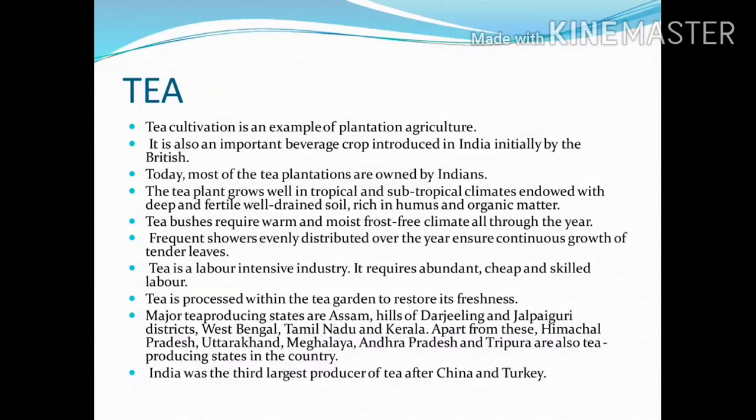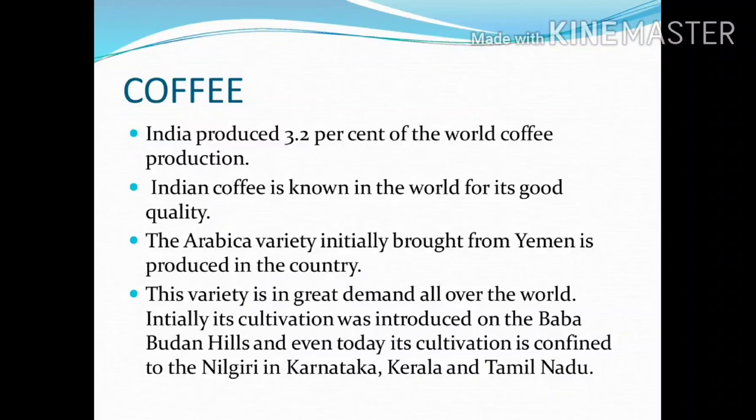Coffee: India produces 3.2% of the world's coffee production. Indian coffee is known in the world for its good quality. The Arabian variety, initially brought from Yemen, is produced in the country and is in great demand all over the world. Initially, its cultivation was introduced in the Baba Budan hills, and even today its cultivation is confined to the Nilgiris in Karnataka, Kerala, and Tamil Nadu.